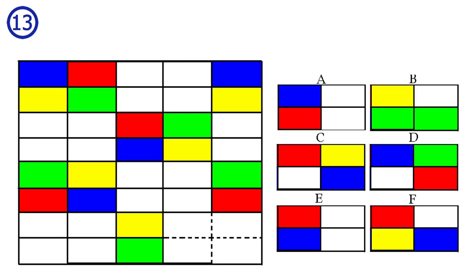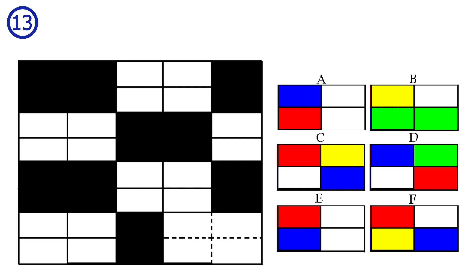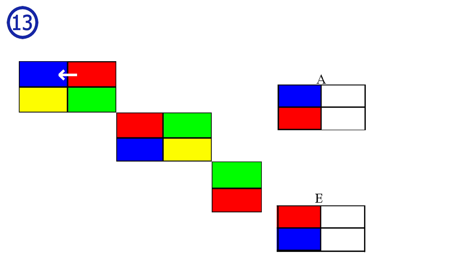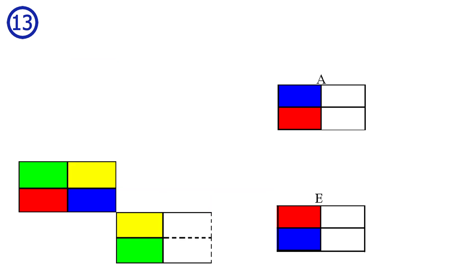Puzzle number 13. The first thing to notice is that the color squares and the white squares make a chessboard pattern. So it fits that the two left tiles of the answer are colored while the two right tiles are white — this only matches answer A and E, so we can eliminate the rest. The colored tiles move counterclockwise from top left to bottom right: red moves left, blue down, yellow right, green up. We move the colored tiles in the top left, giving blue on top and red on bottom. Answer A is correct.